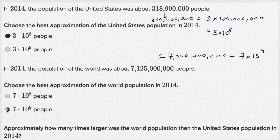Seven times 10 to the ninth is the answer right over here. The other option would be 700 million, which is less than a tenth of the actual world population. Seven billion is, if you're rounding to the nearest billion, how many people there were in 2014.